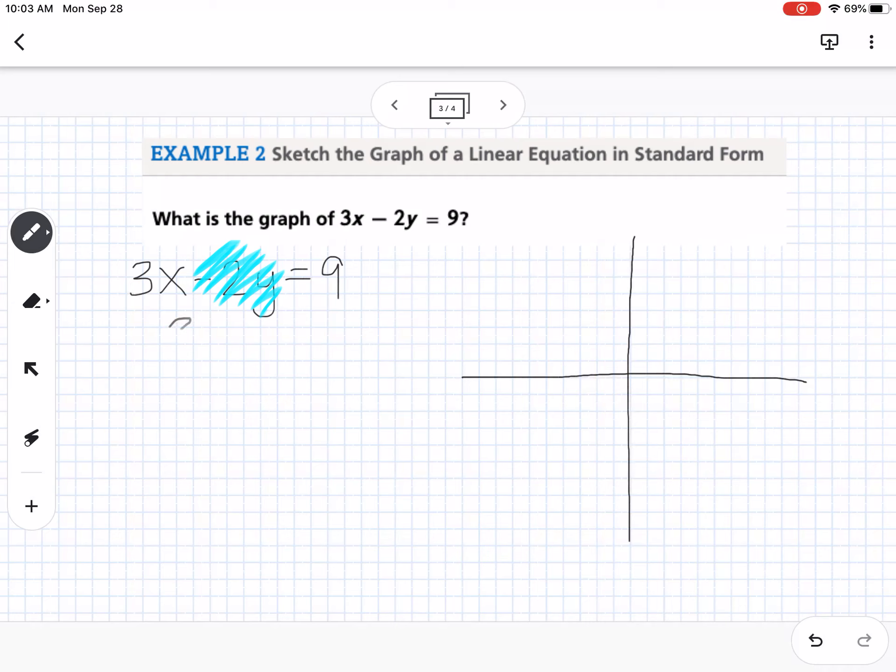That is 3X equals 9. So then if I solve that, I divide both sides by 3, I get that my X intercept is 3.